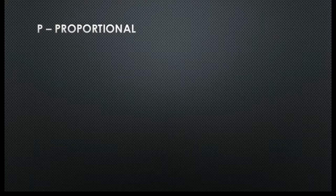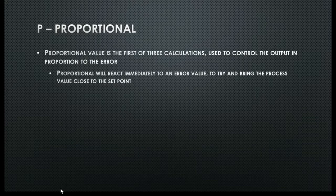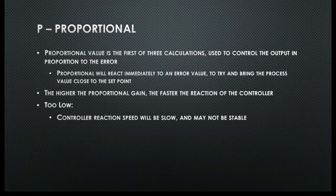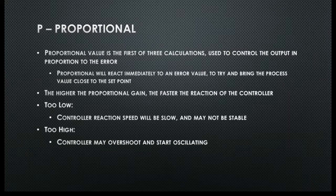Now it's time to look at the P, the I, and the D separately to see how each one affects the output of the controller. The proportional value is the first of the three calculations and it's used to control the output in proportion to whatever the error value is. The proportional will react immediately to the error and tries to bring the process value up close to the set point. The higher the proportional gain, the faster the reaction of the controller. If we set the proportional too low, the reaction speed may be too slow and the controller might become unstable. If the proportional value is set too high, the controller might become unstable, overshoot the set point, and go into an oscillation.